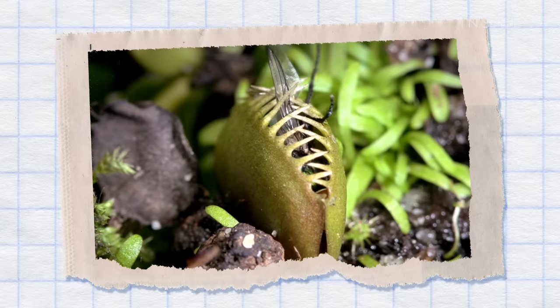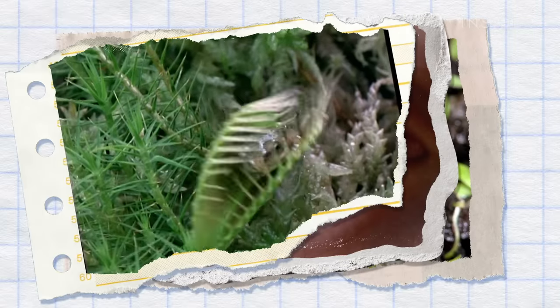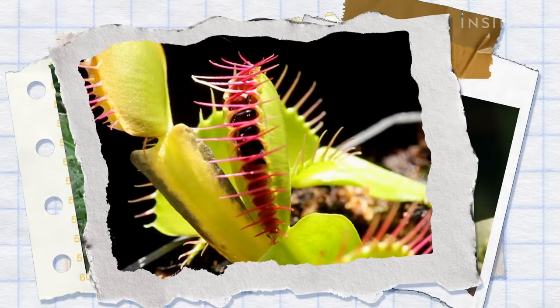But if the bug brushes against another hair, snap! In just a hundred milliseconds, about four times faster than you can blink, the trap slams shut. Then the trap rapidly goes from convex to concave on each side. And the long little spikes on the rims of the pads interlock to form kind of a cage.